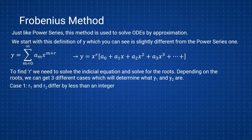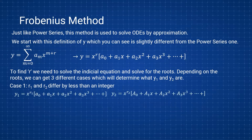In Case 1, root one and root two differ by less than an integer — meaning the difference is a fraction like one-half or one-quarter. In this case, your y1 and y2 don't really depend on which you choose for r1 and r2. Personally, I usually choose r1 to be whichever root makes the problem easiest — for example, if one root is zero, I tend to use that one for solution one.